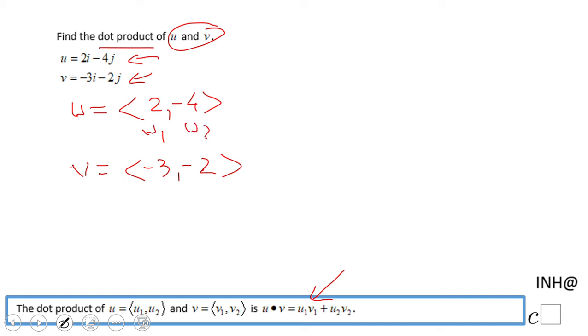The dot product of u and v will be u1 times v1, which is 2 times -3, plus u2 times v2, which is -4 times -2.